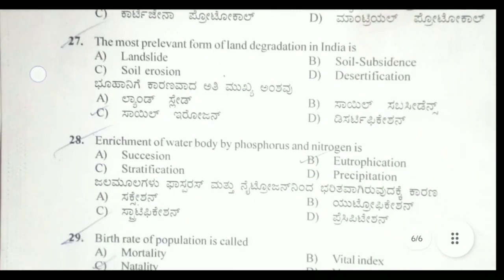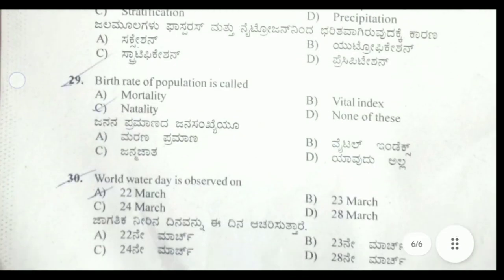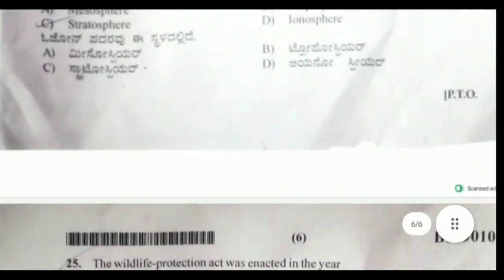Twenty-eighth question: enrichment of a water body by phosphorus and nitrogen is called eutrophication, option B. Twenty-ninth question: birth rate of a population is called natality — natality means birth rate, not death rate. World Water Day is March 22, option A.